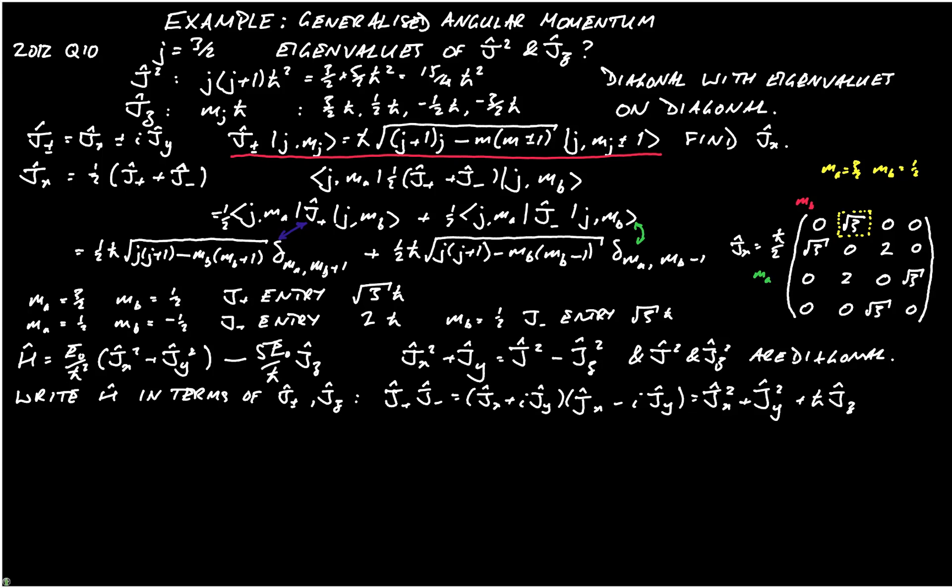A useful consistency check is to, again, look at the dimensions. Notice that we started with j plus j minus. So that's got dimensions of angular momentum squared. We end up with jx squared and jy squared, both of which have dimensions angular momentum squared. And the jz has a factor of h-bar. So everything is consistent in that definition.